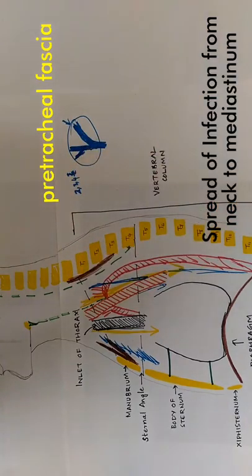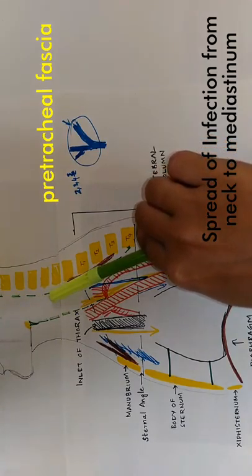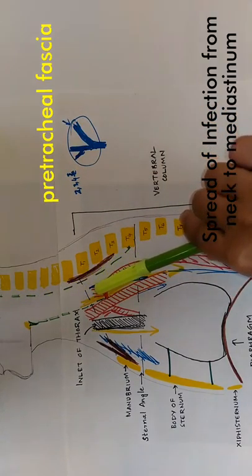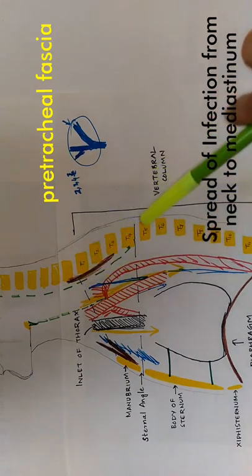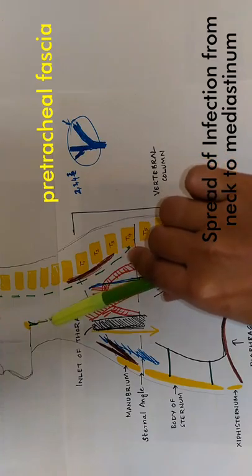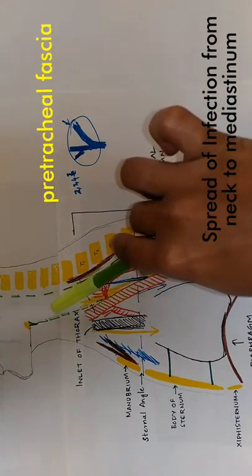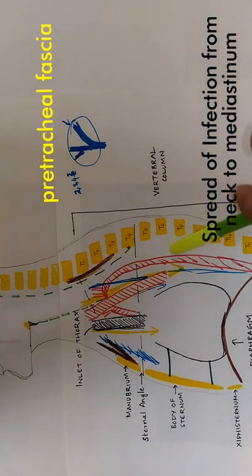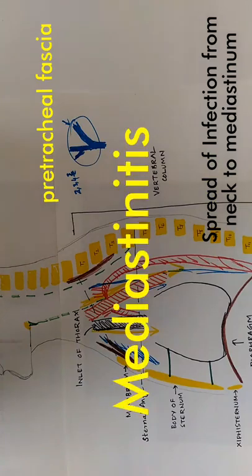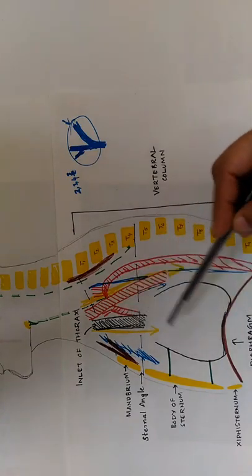When an infection occurs in the neck in between the pre-tracheal fascia and the pre-vertebral fascia, it can spread into the superior mediastinum and through it into the posterior mediastinum, causing mediastinitis.